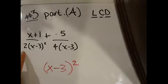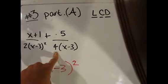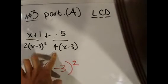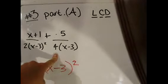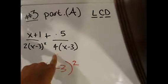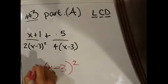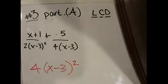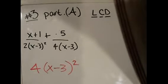You see that this number has 2, and this number has 4. Since 2 can fit into 4, you have to take all, which is the 4. This is your least common denominator.